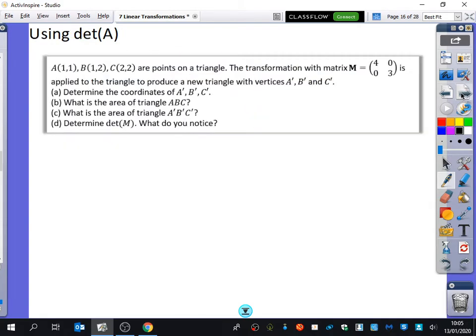Now the next part that we've got is about the determinant. Now you already know the answer to this. What does the determinant tell us when we're looking at, it's the scale factor of what? The area. The scale factor of the area. The determinant is the scale factor of the area. So we've got the triangle ABC. We've got these different points here. And it says the transformation with this matrix is applied to the triangle to produce a new triangle with vertices A dash, B dash, C dash. Determine the coordinates of A dash, B dash, C dash.